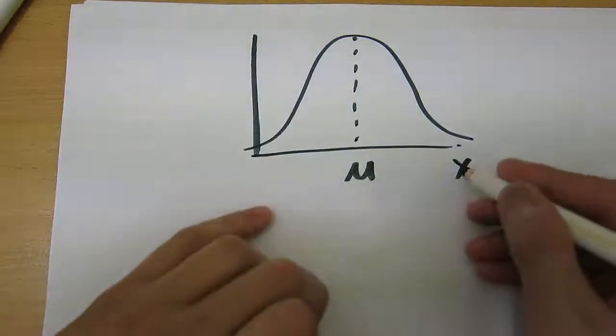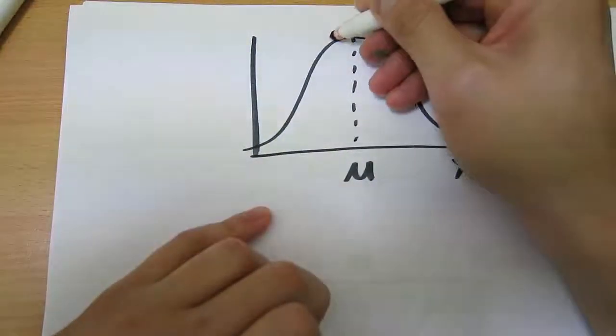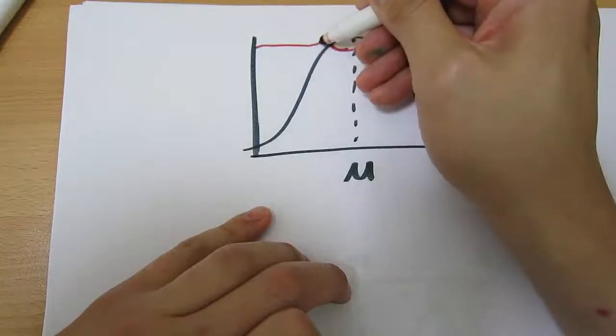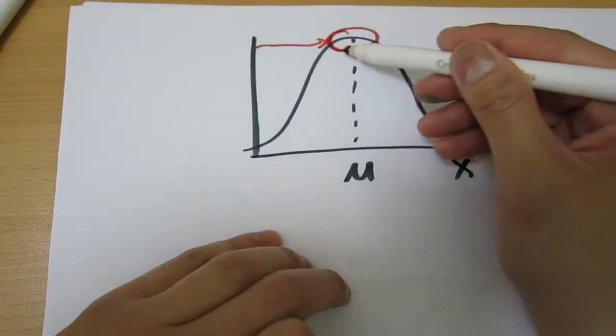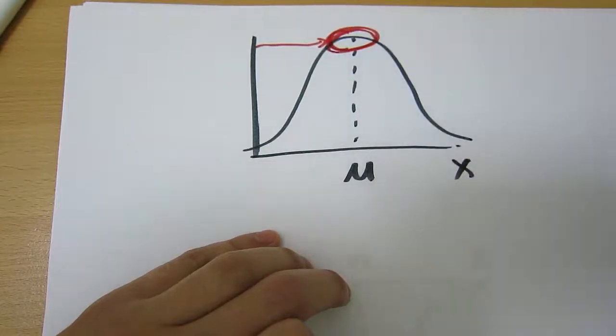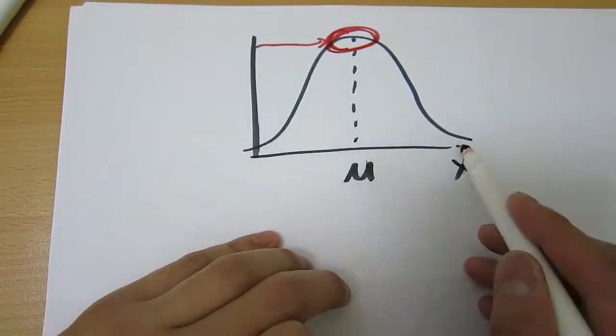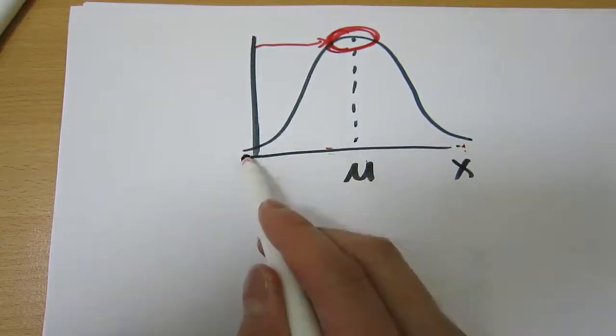This means that for x-values around the mean, our frequency or probabilities are quite high, which means we're more likely to observe x-values around the mean. What happens if we've got x-values that are much higher than the mean, or much lower than the mean?